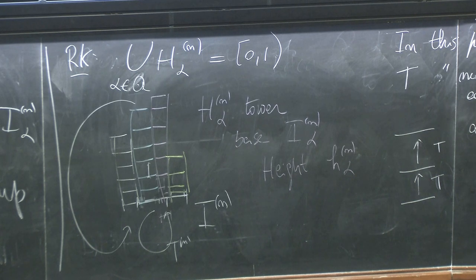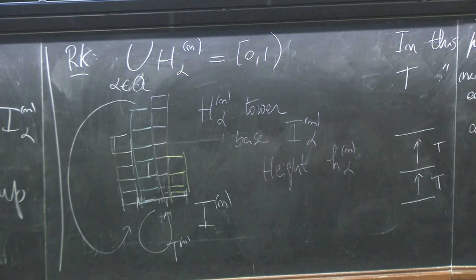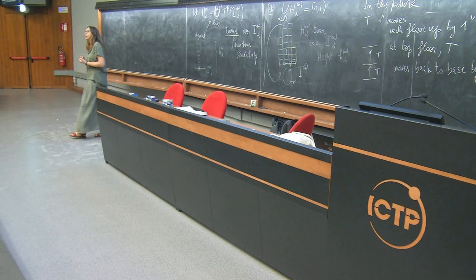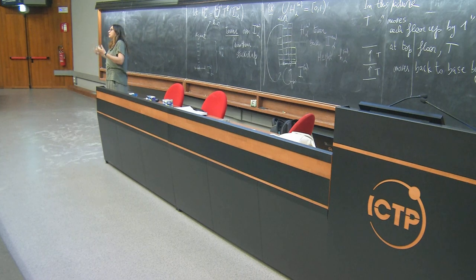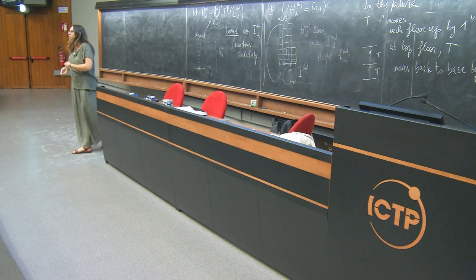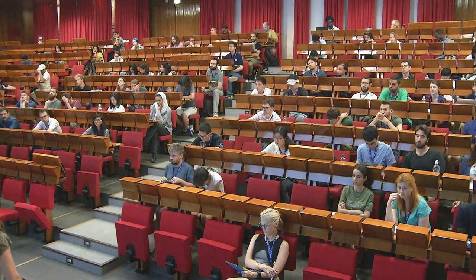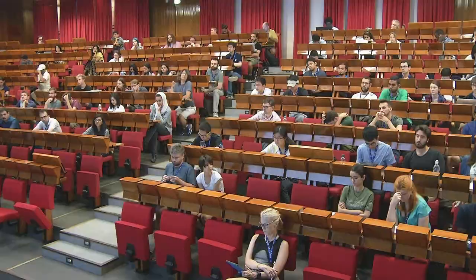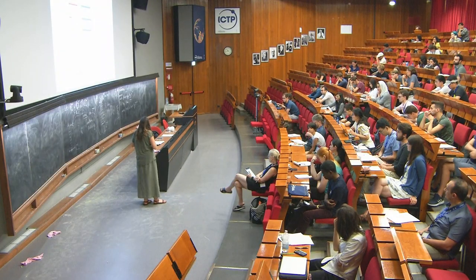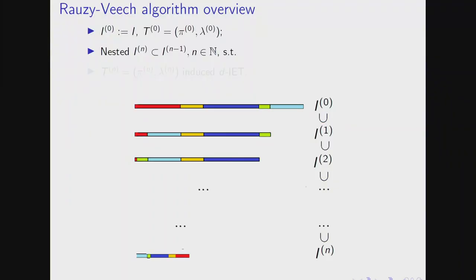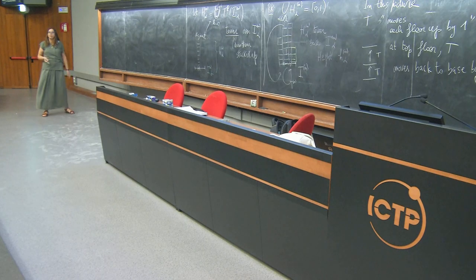A lot of properties of interval exchange maps can only be proven using this picture. These towers are related to finite rank dynamical systems, cutting and stacking — a general concept in dynamics that you may encounter in other settings. Inducing and representing the space as towers is used in hyperbolic dynamical systems and many other setups.